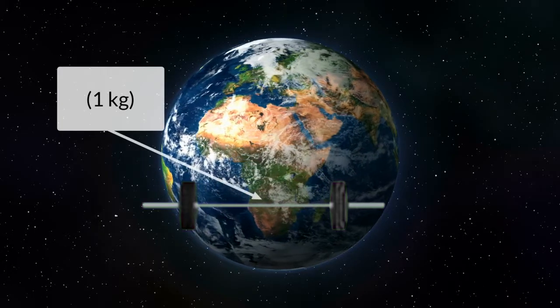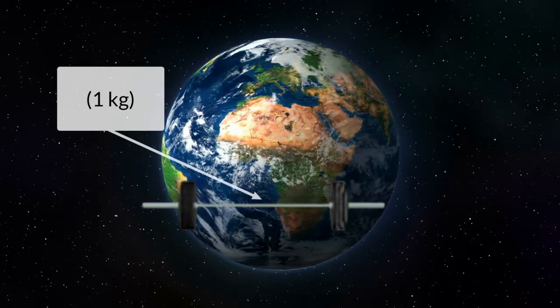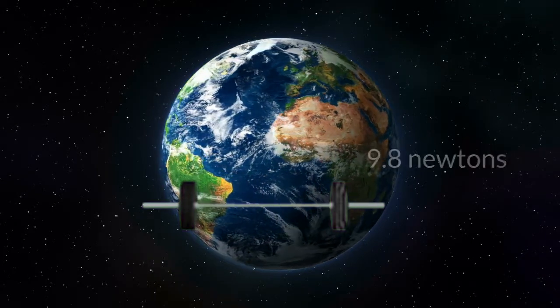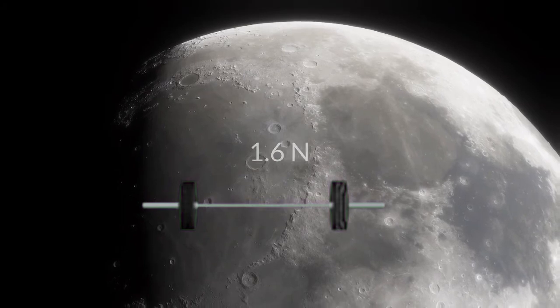For example, an object with a mass of one kilogram has a weight of about 9.8 newtons on the surface of the Earth and about one-sixth as much on the Moon.